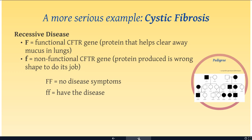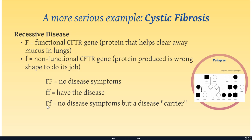Ten to fifteen years ago, people with cystic fibrosis could only live typically until seven to ten years old. With additional treatments and the hope that we've figured out some gene therapy ideas for this, people are living into their 20s and 30s, and hopefully outcomes will continue to improve. If you have big F little f, you don't have the disease or the symptoms, but you are considered a carrier. The big F is dominant, and it turns out if only half of your proteins are the correct shape, you can still clear enough mucus that you won't have significant side effects, but you will pass the allele along.